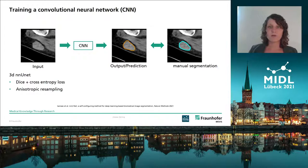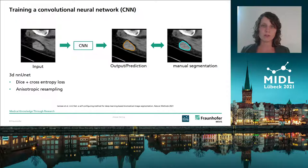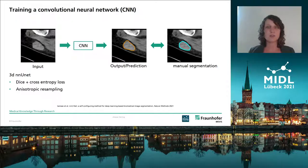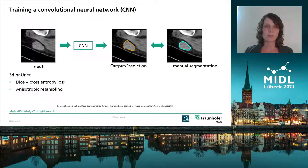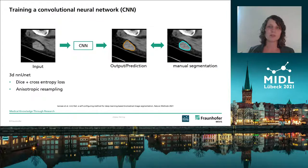The first component of our pipeline is the automatic segmentation after the bounding box, or region of interest, was extracted using the click annotation of the radiologist. Due to the success of nnU-Net in several challenges, we decided to use this to segment the lesion inside the bounding box. All chosen parameters can be found in our paper. One important thing to mention here is the anisotropic resampling because of the slice thickness.